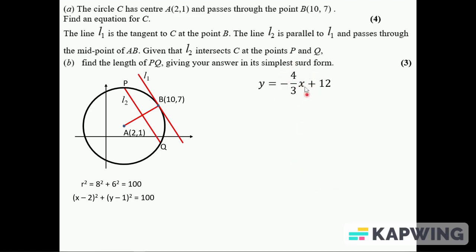Then I'm going to use this with the equation of the circle. So if y is equal to this, y minus 1 is going to be minus 4/3 x plus 11. And if I square both these out, I get this unholy mess.